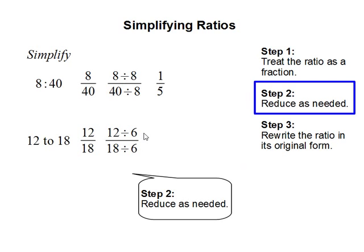12 over 18 can be reduced by 6. 12 divided by 6 is 2. 18 divided by 6 is 3. So the resulting fraction is 2 thirds.